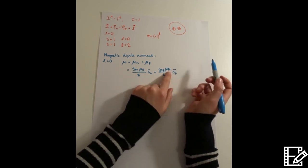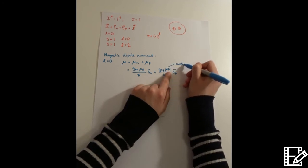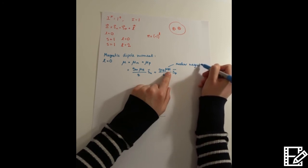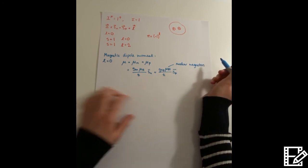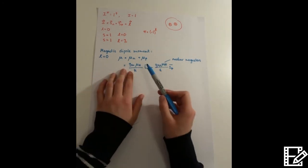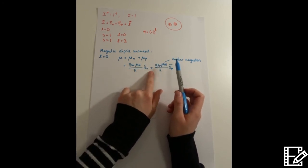And this mu n is the nuclear magneton. But the details are not so important here. What is important is to realize that what we measure is actually very close to this value, so the theoretical value predicted by this equation.